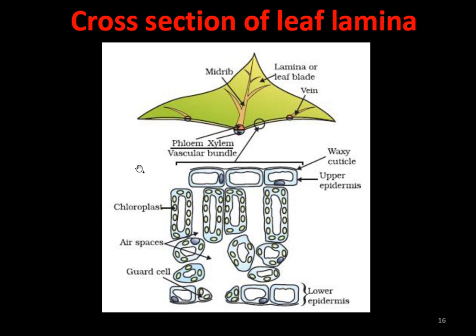Observing the cross-section of a leaf: the middle portion is the midrib, which contains xylem (water-conducting tissue) and phloem (food-conducting tissue), together called the vascular bundle. Under the microscope, green dots visible in the cells represent chloroplasts, which contain chlorophyll. They are very loosely arranged with air spaces between them, and guard cells are present to protect the stomata.